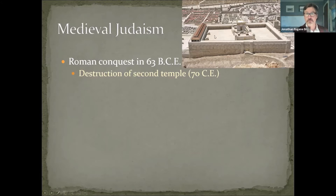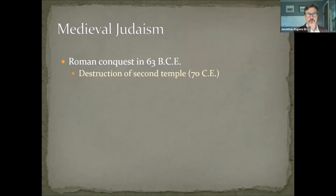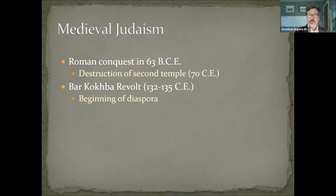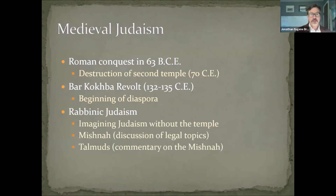All that remains of this temple now is the platform and the wall — what's called the Western or Wailing Wall. There was yet another revolt, and at the end of this revolt in 135 came the Roman Empire's decree that all Jews must leave the province of Palestine. This is the beginning of the official diaspora — Judaism now without a temple. So instead of priests worshiping God at the temple and bringing sacrifices, Judaism had to figure out how to be a religion without the temple. This is rabbinic Judaism.